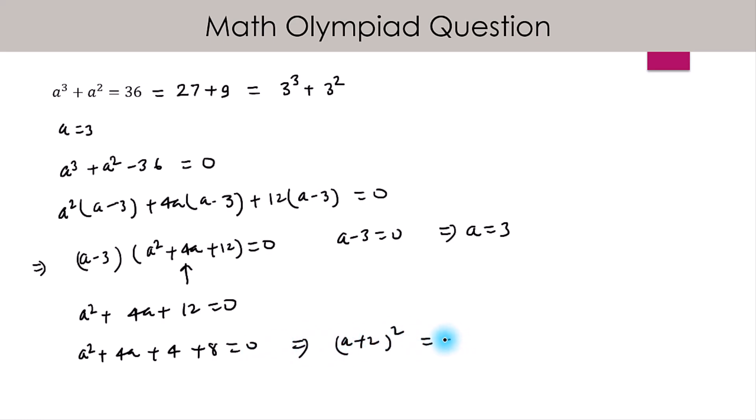This implies a + 2 = ±√(-8) = ±√8 · √(-1) = ±√8 · i, where i = √(-1).